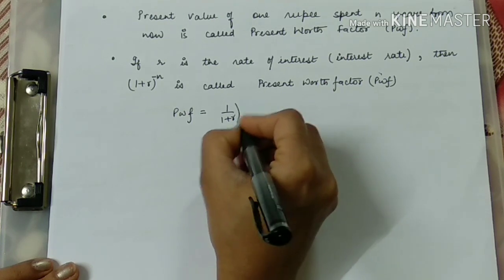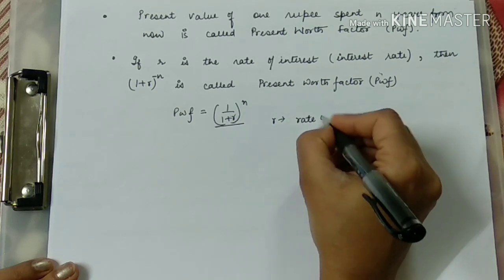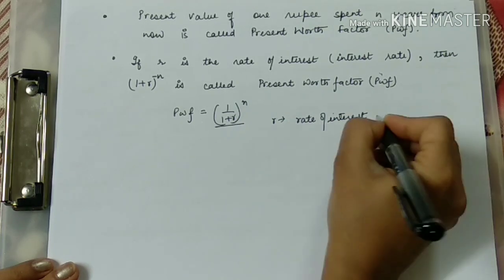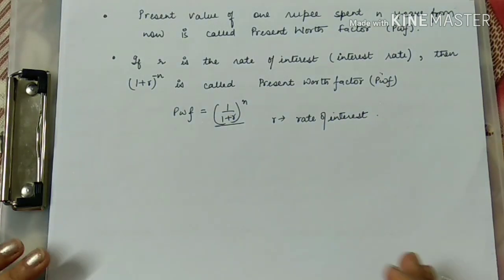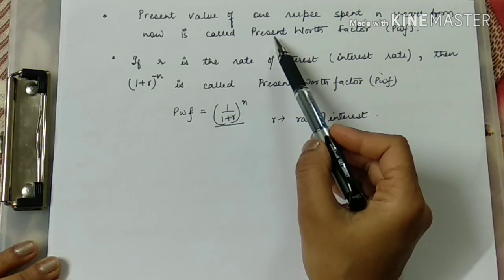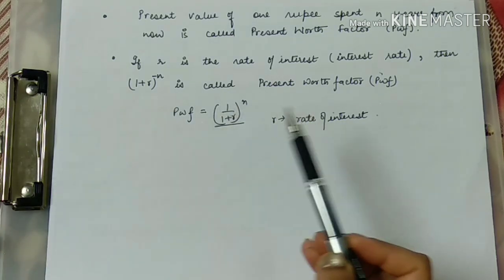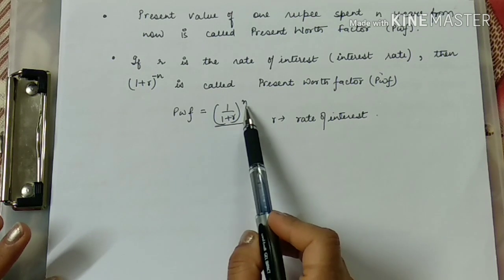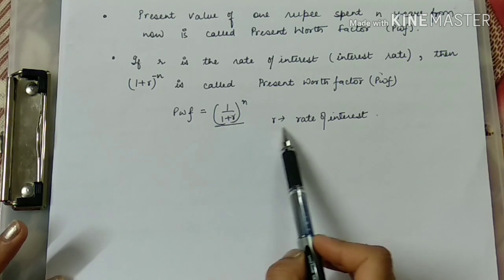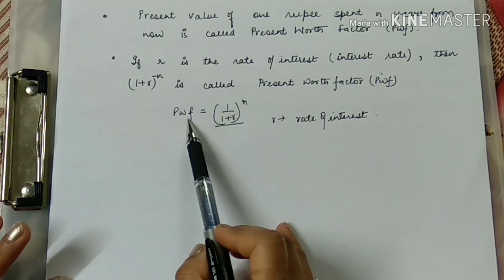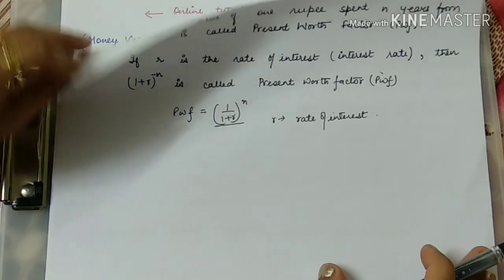The present worth factor (PWF) can be written as 1 upon (1 + r) to the power n, where r represents the rate of interest — how much the value of money increases over n years. With respect to this rate of interest, we calculate the present worth factor using this formula.